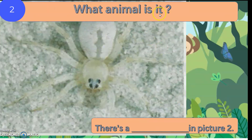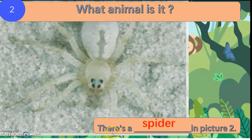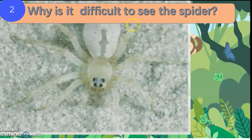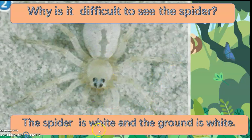What animal is it? Can you see what animal is camouflaged here? Yes, it's the spider. There is a spider in picture two. Why is it difficult to see the spider? Because this spider blends with the surrounding. What colour is the spider? The spider is white and the ground is white too. So, we cannot see the spider.